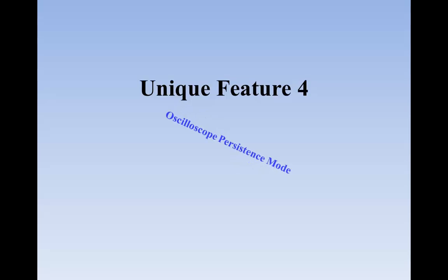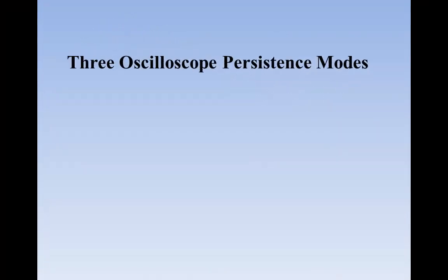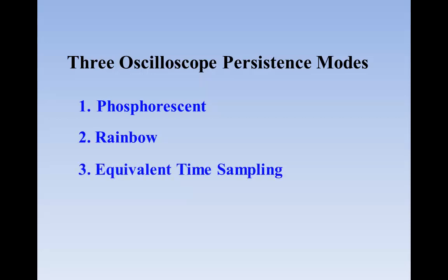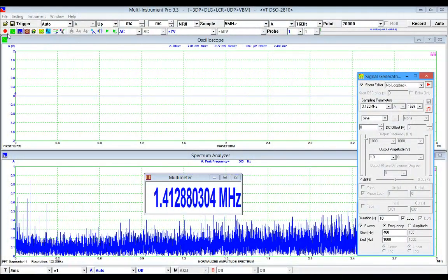Unique Feature 4: Oscilloscope persistence mode. This mode allows hundreds of consecutive waveforms to be superimposed in the oscilloscope window in three ways: phosphorescent, rainbow, and equivalent time sampling. The former two are useful to capture intermittent and unstable events hidden in a series of repeated normal events, while the latter one can be used to increase the displayed samples per cycle.